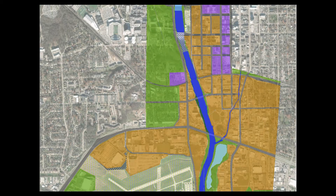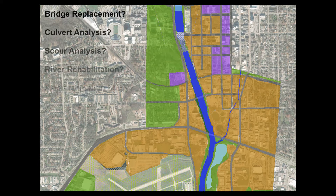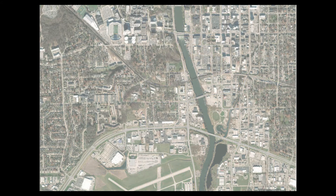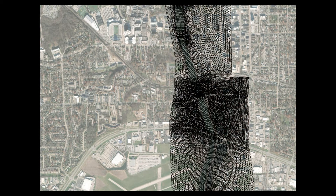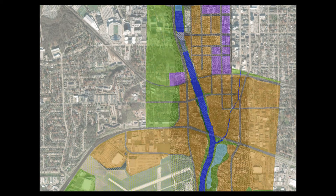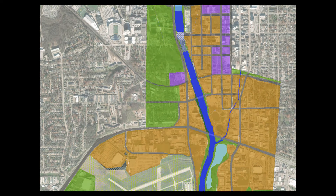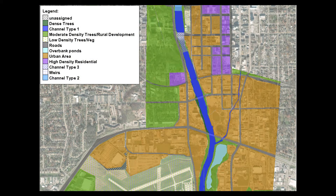This video will cover how to delineate and assign roughness values to areas that represent land use types for use in 2D models. Like other model parameters, it is important to understand what the application of the model will be so that appropriate land use detail and roughness value parameters can be specified. 2D models require roughness parameters assigned at each element or cell face depending on the type of model. To facilitate assigning the roughness values, models use a data set representing varying land use types with associated roughness values.